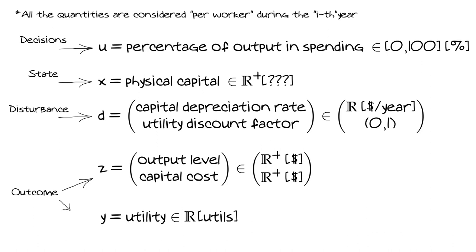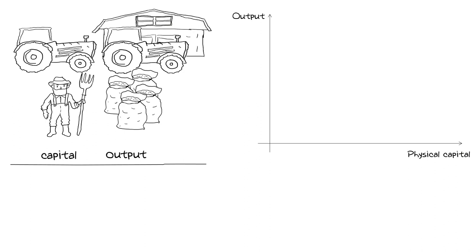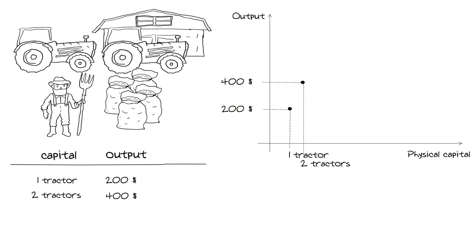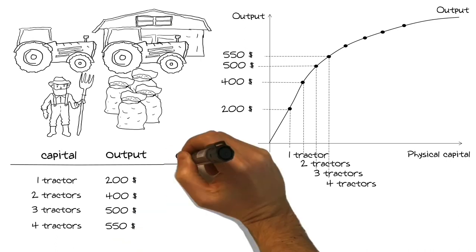Now I want to show how adding complexity won't change the number of horsemen — still four — but it changes their dimension. Let's take a closer look at our farmer. Assume at the beginning he has only one tractor that produces output worth 200 dollars. The year after, he buys a second tractor and produces more output. The third year he buys a third tractor, but the contribution is smaller, and adding a fourth tractor makes an even smaller contribution. This phenomenon is called diminishing returns — the output does not increase at the same rate as the physical capital.